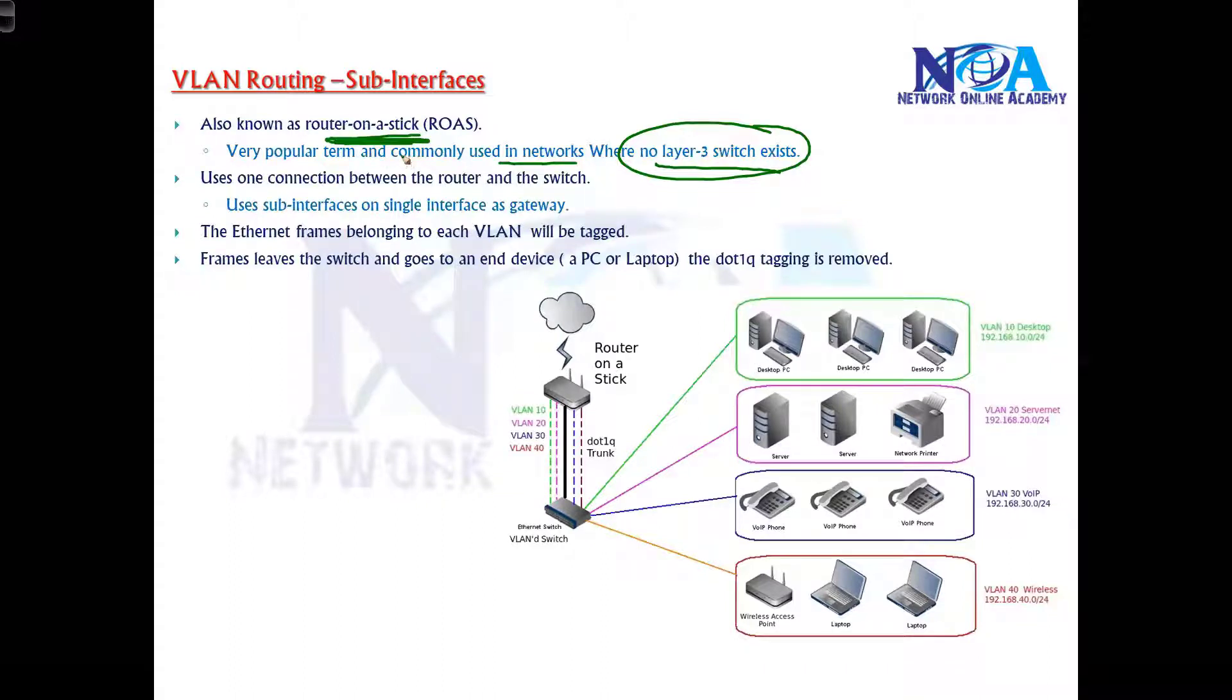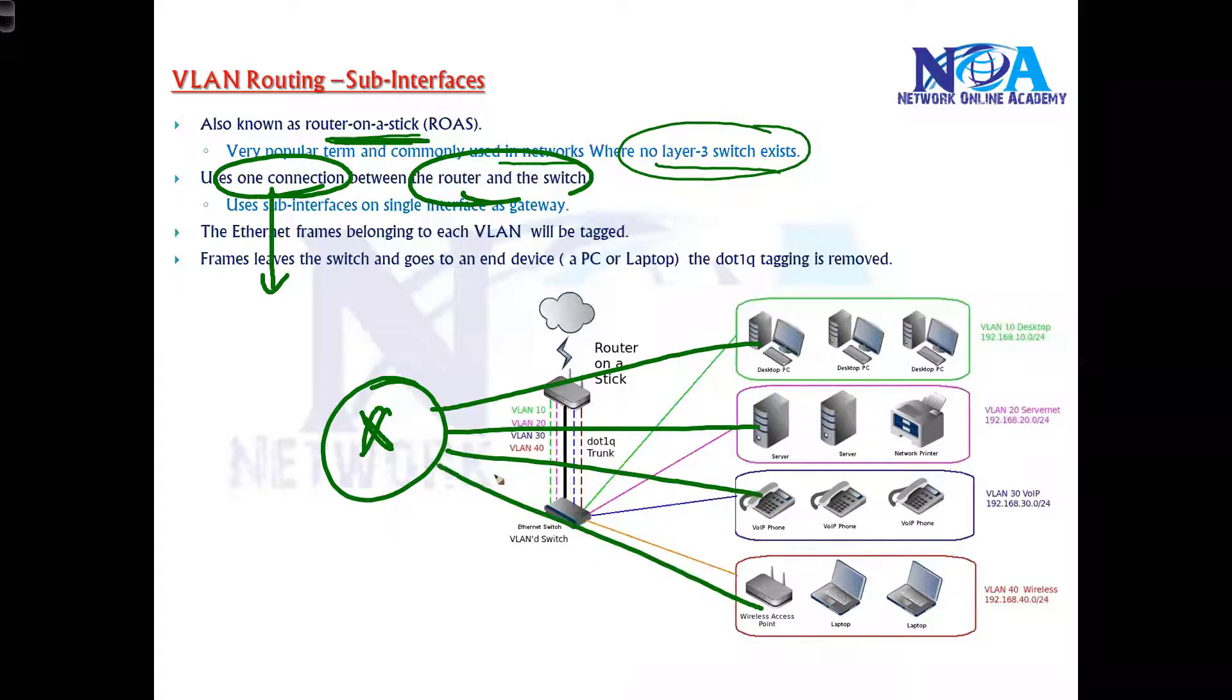This is better than the previous version because we'll be using only one connection between the router and the switch. So if you remember when we connected the VLANs, if you have four VLANs we need to have four gateways, so four physical gateways.